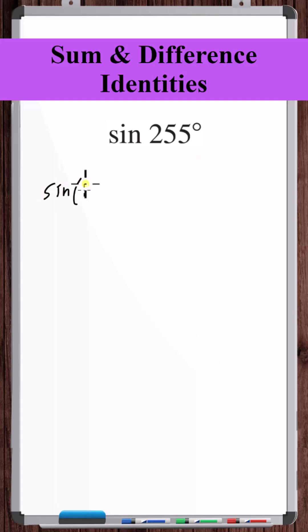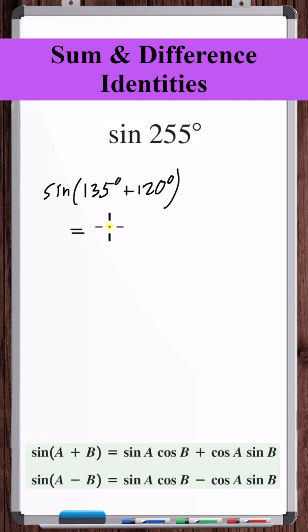So let's write this as the sine of 135 degrees plus 120 degrees. Now we can expand this out using the sum formula for sine.